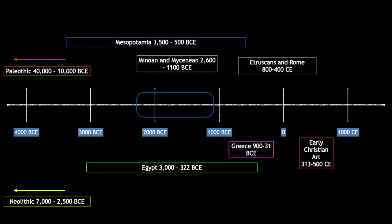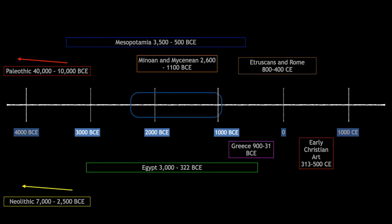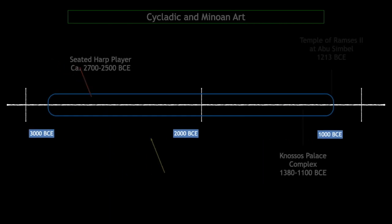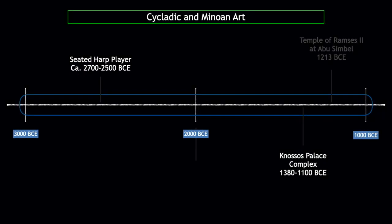On this timeline, I have put a Cycladic work of art, the seated harp player, and something that we'll look at next time, which is the Knossos Palace complex of Minoan civilization. Just to sort of show you that there's not a lot here, and we are working with limited information. These next few lectures are actually going to be similar to Neolithic art, in which we don't really have a lot of information and there's a lot of speculation.